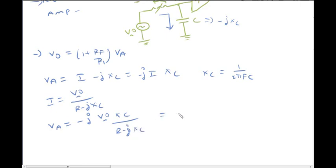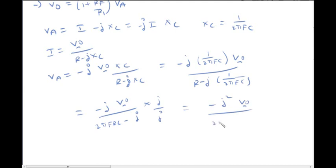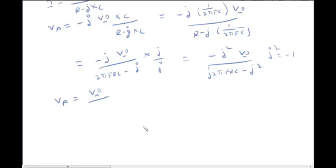Substituting Xc: VA equals minus j times (1/2πFC) times VI, divided by R minus j times (1/2πFC). Multiplying numerator and denominator by j: minus j squared equals 1, giving VA equals VI divided by 1 plus j·2πFRC.